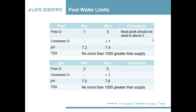For spas, the free chlorine, because of the increased risk, the minimum is three and the maximum is still five. The combined chlorine is still the same levels, which is less than one. The pH is a slightly wider but starting lower range of seven to 7.6, and that's because of the increased risk in spa pools. The TDS is exactly the same as the pools — no more than a thousand greater than the incoming supply.